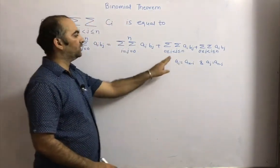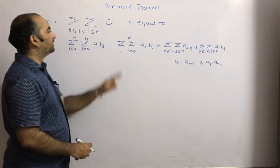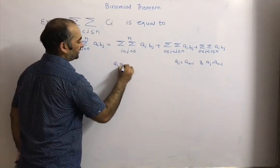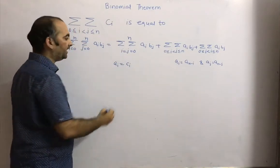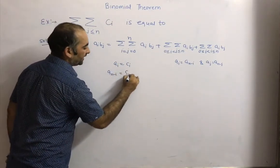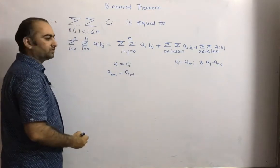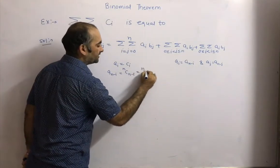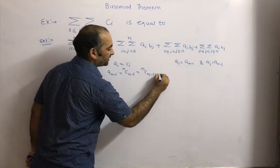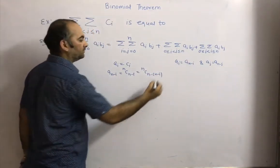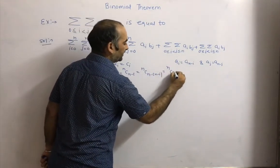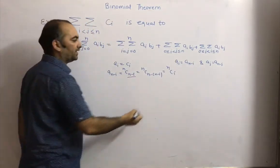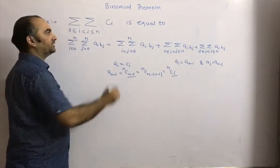If we take a_i = nCi, then a_{n-i} = nC_{n-i} = nCi. So nC_{n-i} equals nCi, which means the series nCi is symmetric. Similarly, b_j here is nothing — so we take b_j = 1. Since b_{n-j} is also 1, we have b_j = b_{n-j}, so the series b_j = 1 is also symmetric.